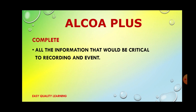The next element is Complete — all information that could be critical to recording an event must be included. If you have written some information on paper but supporting information is missing, then the first information is of no use. For example, if you have weighed a reference standard or working standard on an analytical balance and taken a weight printout, that information is incomplete unless you also note what sample was weighed, the date and time, and who performed the weighing. To make information complete, additional supporting information must be available in the document along with the readings.